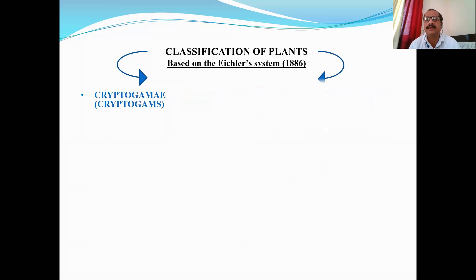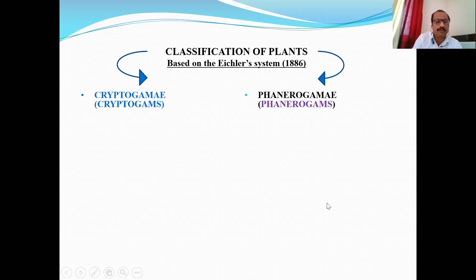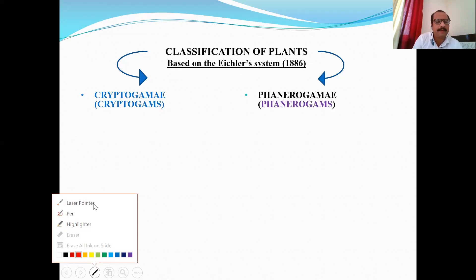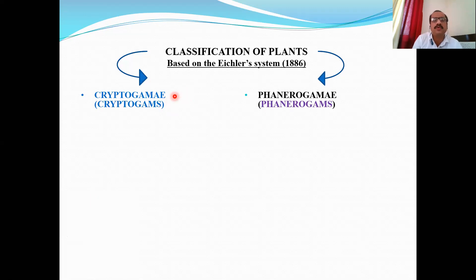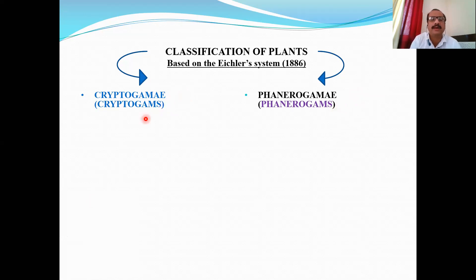The two types are Cryptogamae and Phanerogamae. Cryptogamae is the name of the taxon, and all plants belonging to this group are called cryptogams. Phanerogamae is the scientific name of the other group, and all plants belonging to it are called phanerogams.